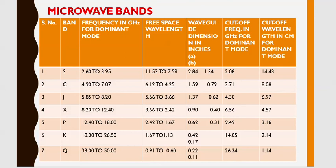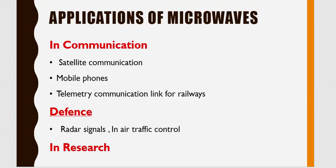Similarly, the other microwave bands are named as C band, J band, X band, P band, K band, and Q band. These bands have different frequencies and different waveguide dimensions according to their applications. The common sources for generation of these microwaves are either a klystron or a magnetron. In the next slide we will discuss the applications of microwaves.